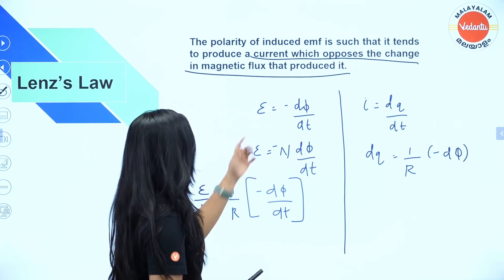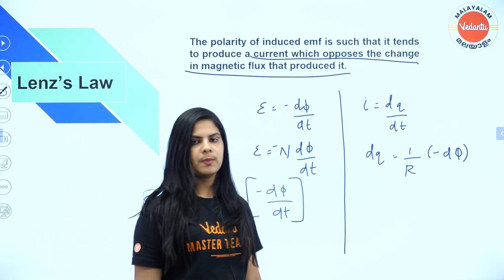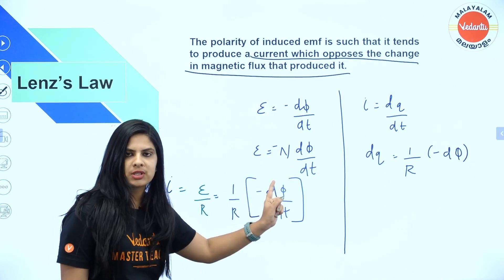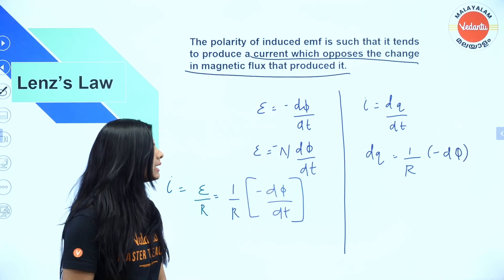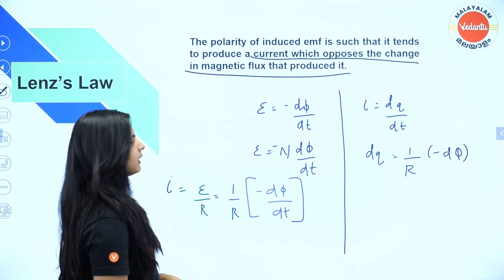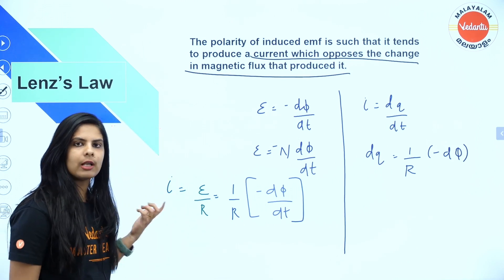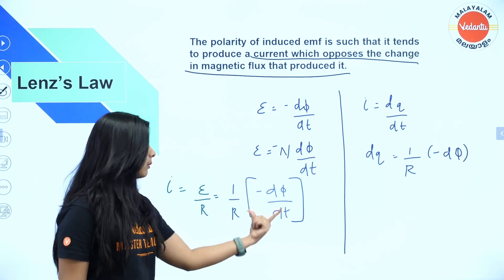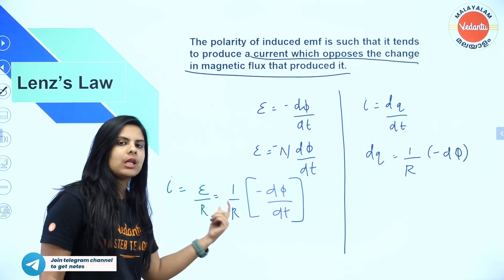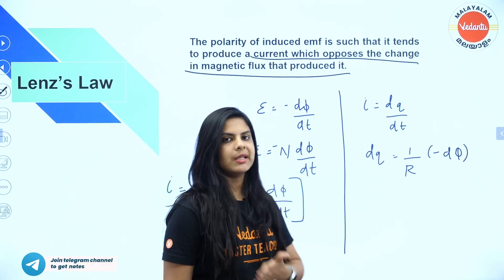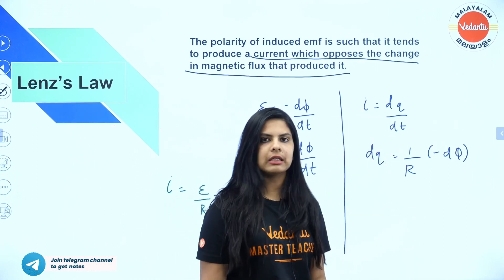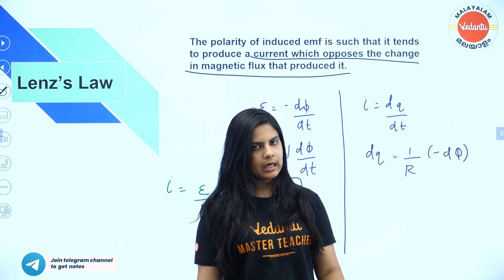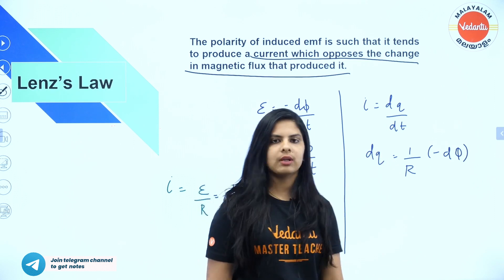The important formula is: induced EMF equals minus dΦ/dt. When there are N number of turns, it becomes induced EMF equals minus N dΦ/dt. Current is induced EMF divided by resistance R. We can also derive the charge Q as dQ/dt equals EMF divided by R.